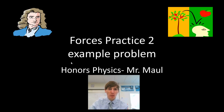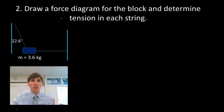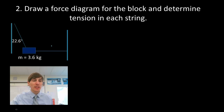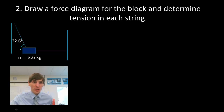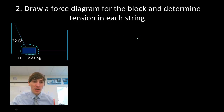Let's go ahead and get started with question number two. For question number two, we're looking at a force diagram for a block, and there are two strings attached to it. I need to find the tension in each one of those strings, but it doesn't give me anything about the string — all it gives me is the mass and the angle from which one of those strings is hanging. The first step is to draw and label a force diagram for the object.